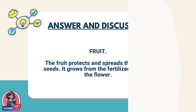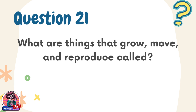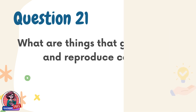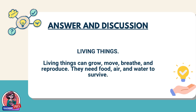Question 21. What are things that grow, move, and reproduce called? Answer: Living things. Living things can grow, move, breathe, and reproduce. They need food, air, and water to survive.